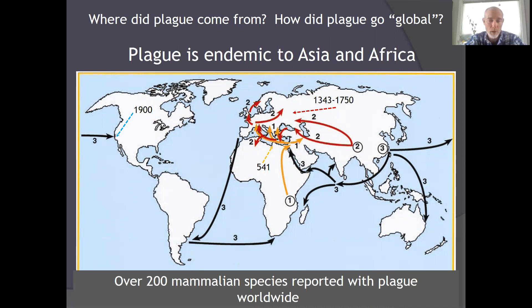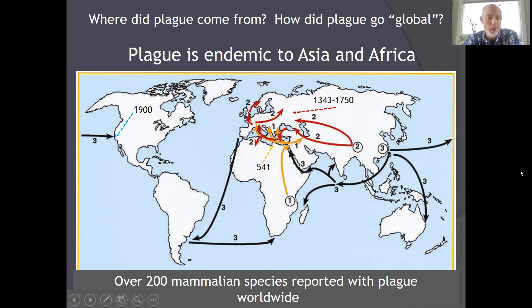You can see how plague got moved around the world and introduced into western North America in about 1900, likely from grain ships with rats carrying fleas. Currently there are over 200 mammalian species that can become infected or have been reported infected with plague.